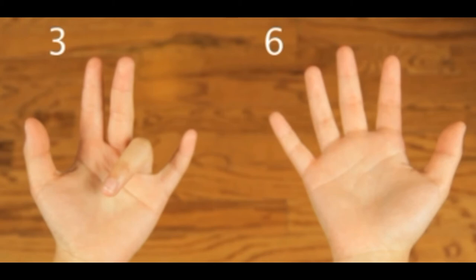And then on the right, you can see that there are 6 fingers that are up, and that's your ones place. So 4 times 9 is the same as 3 tens and 6 ones, or 36. So this is a great trick.